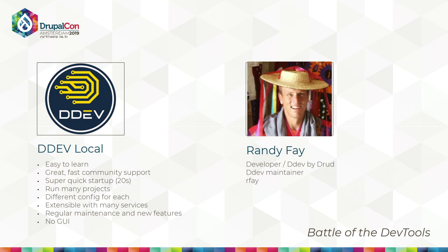DDEV local is really easy to learn and easy to get that first startup ramp. It is a command line tool, and we don't have a GUI for it — we wish we did. You can install it with Homebrew if you're on Mac or Linux. There's a nice Windows installer — you can install it with Chocolatey or download from the GitHub releases page. You can go into a directory, run 'ddev config' and 'ddev start', put an index.php in there, and it'll give you a link. You click it and there you are.